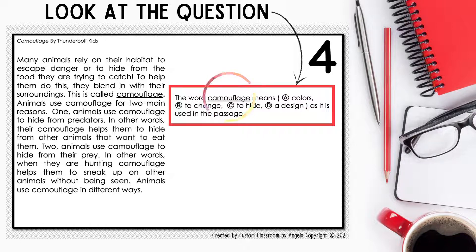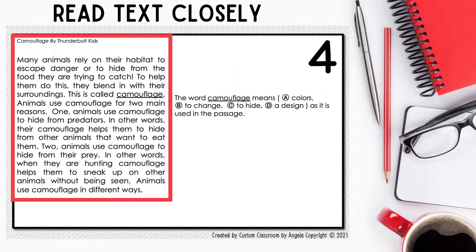So we know we are looking for the meaning of the word camouflage. Now let's look at the text. Many animals rely on their habitat to escape danger or to hide from the food they are trying to catch. To help them do this, they blend in with their surroundings. This is called camouflage. Animals use camouflage for two main reasons. One, animals use camouflage to hide from predators — in other words, their camouflage helps them to hide from other animals that want to eat them. Two, animals use camouflage to hide from their prey. In other words, when they are hunting, camouflage helps them to sneak up on other animals without being seen. Animals use camouflage in different ways.